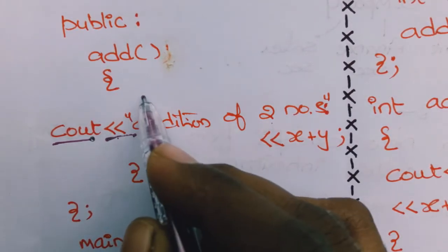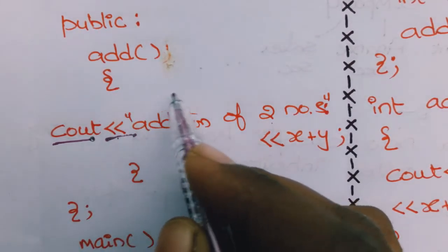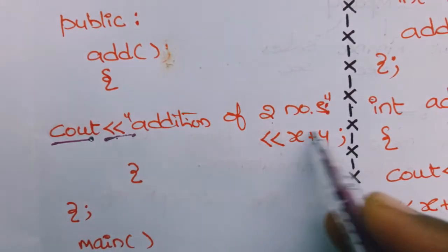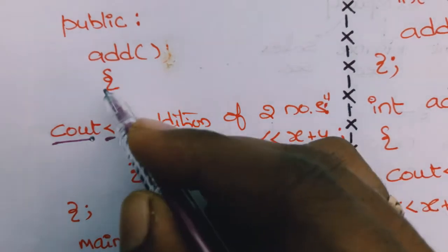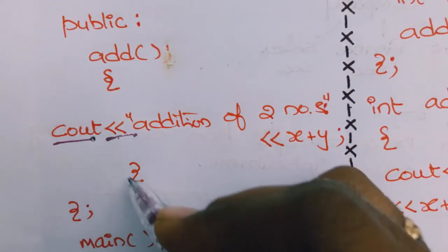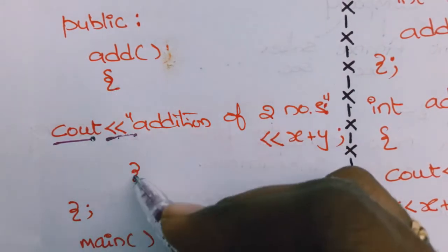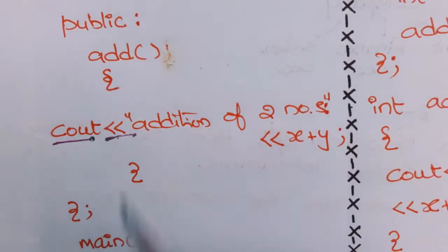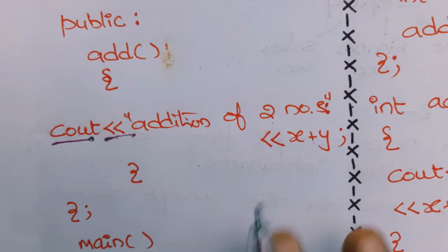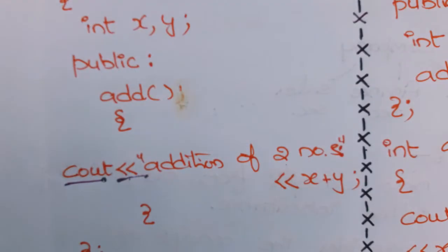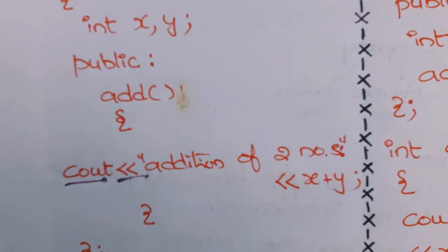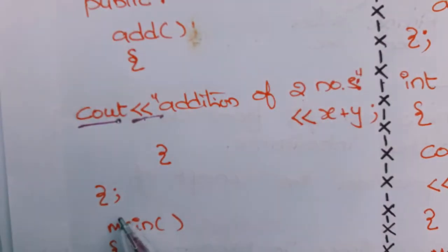I want to do addition of two numbers, so I write x + y. Alternatively, you can declare int z = x + y and write z here — no problem. Next the add function body is closed. Then the class is closed here with a semicolon.